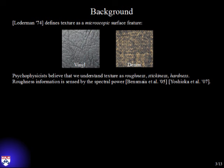Textures can be defined as microscopic surface features. If you take any surface you find in daily life and zoom in close enough, you'll find very interesting geometry and surface properties at the microscopic level. Psychophysicists believe that one of the main ways we understand texture information is through roughness — the vibration induced when we roll across these surfaces — and that roughness is sensed by the spectral power in these vibration signals: the amplitudes and frequencies present when we roll over the surfaces.